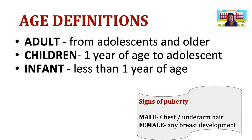For basic life support, we need to know the age groups. First is adult — from adolescence to older. Children are from one year of age to adolescence. If the patient is nine months, they are not included in the children category. Infant is less than one year of age.